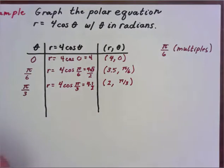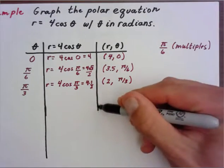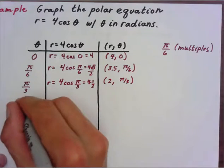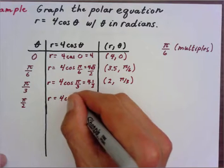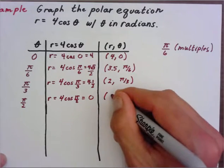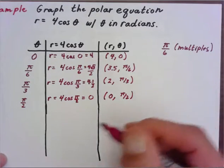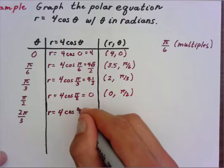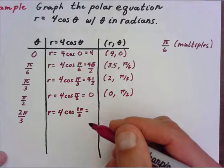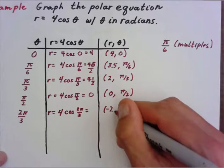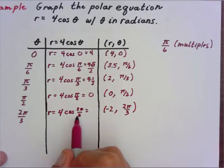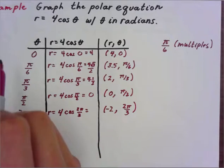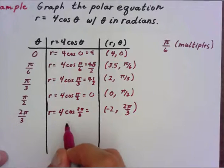This continues until we get all the way to pi, and we stop at pi because the values start to repeat. At pi over two — 90 degrees — r equals four times cosine of pi over two. Cosine of pi over two is zero, so r is zero, giving the point (0, π/2). Then at two pi over three, r equals four times cosine of two pi over three, which equals negative two — cosine of two pi over three is negative one-half. Think about symmetry: pi over three gives one-half, and on the other side of the unit circle the x-values are negative.